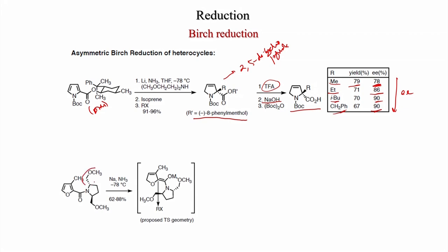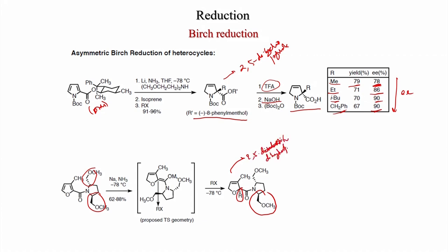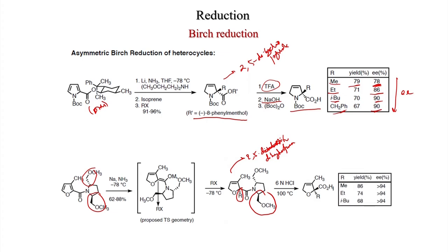Using a C2-symmetric chiral auxiliary, the compound treated with sodium in liquid ammonia at −78°C gives an enolate that reacts with RX from the down side. For 2,5-di-substituted furan with 6N HCl cleaving the auxiliary and giving carboxylic acid: R = methyl gives >94% ee with 86% yield; R = ethyl gives >94% ee with 74% yield; R = isobutyl gives >94% ee with 68% yield.